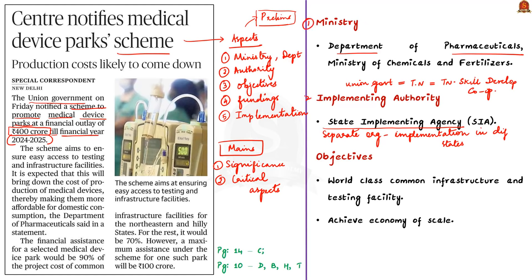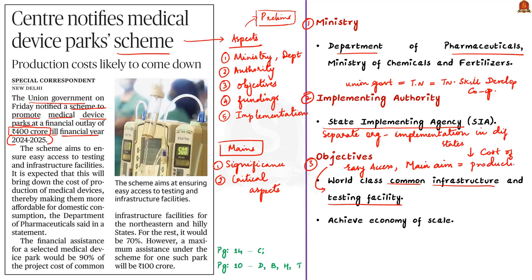Coming to the third point — the objectives — this scheme has two major objectives. The first objective is that the scheme aims to create world-class common infrastructure and testing facilities to ensure easy access and to reduce the cost of production of medical devices. When the cost of production is reduced, the industry becomes more competitive in the world market, and Indians can get affordable medical devices domestically.